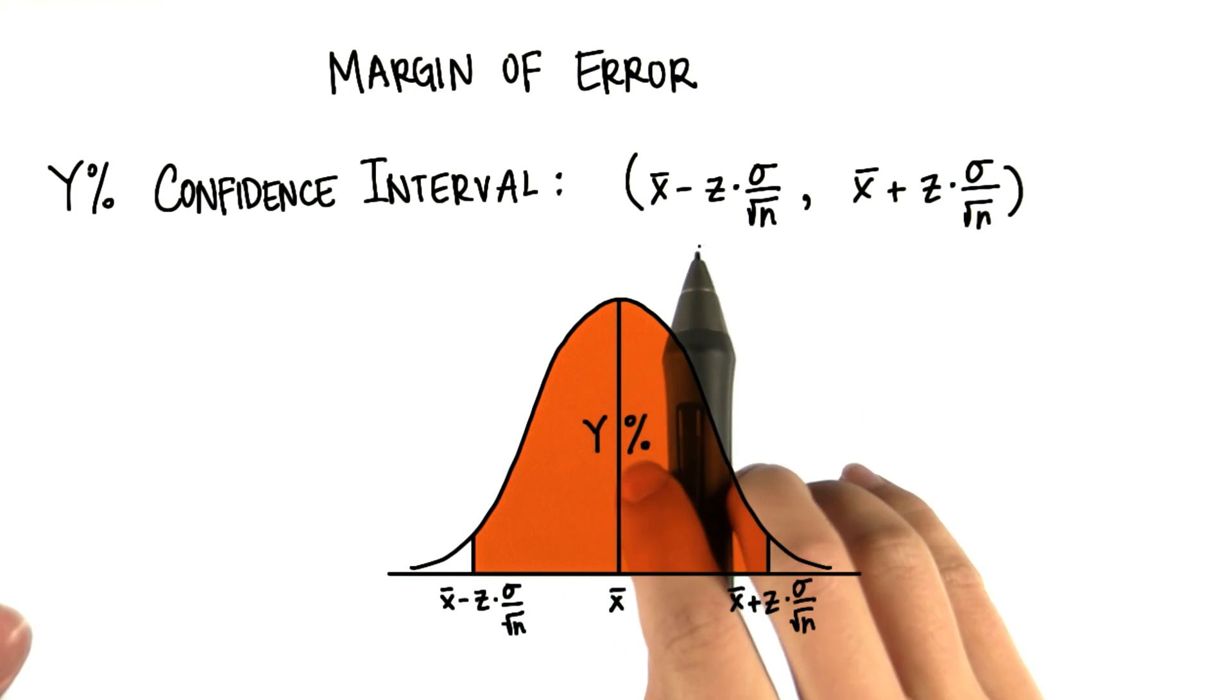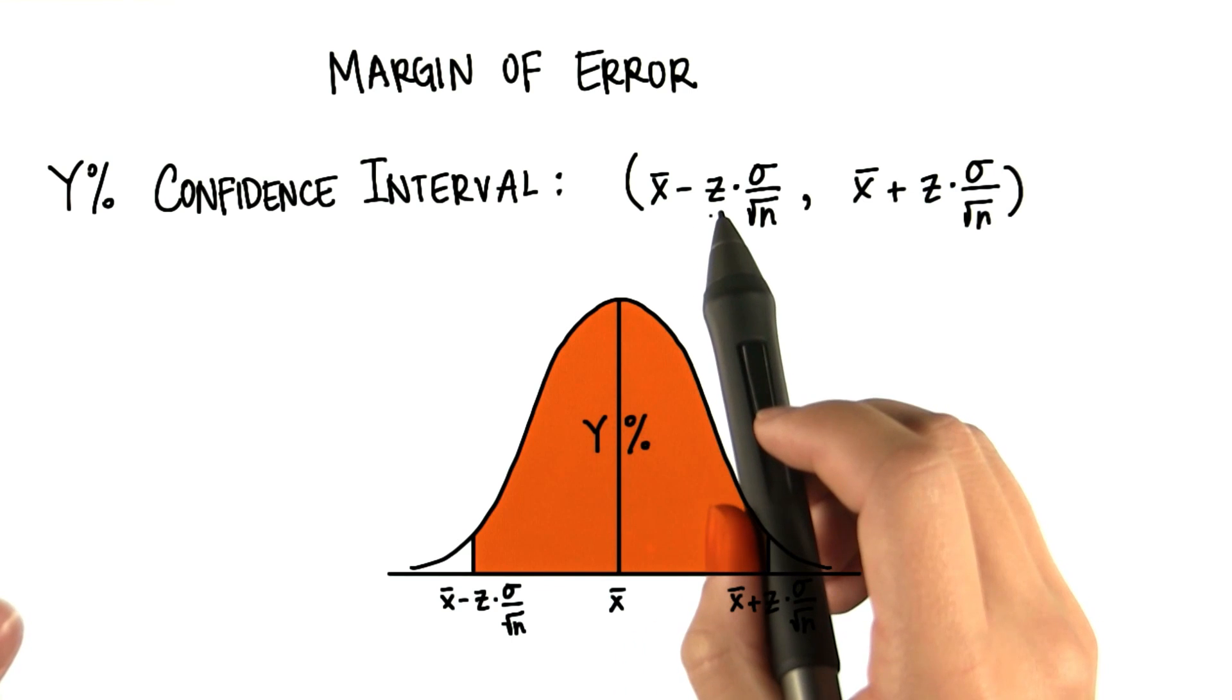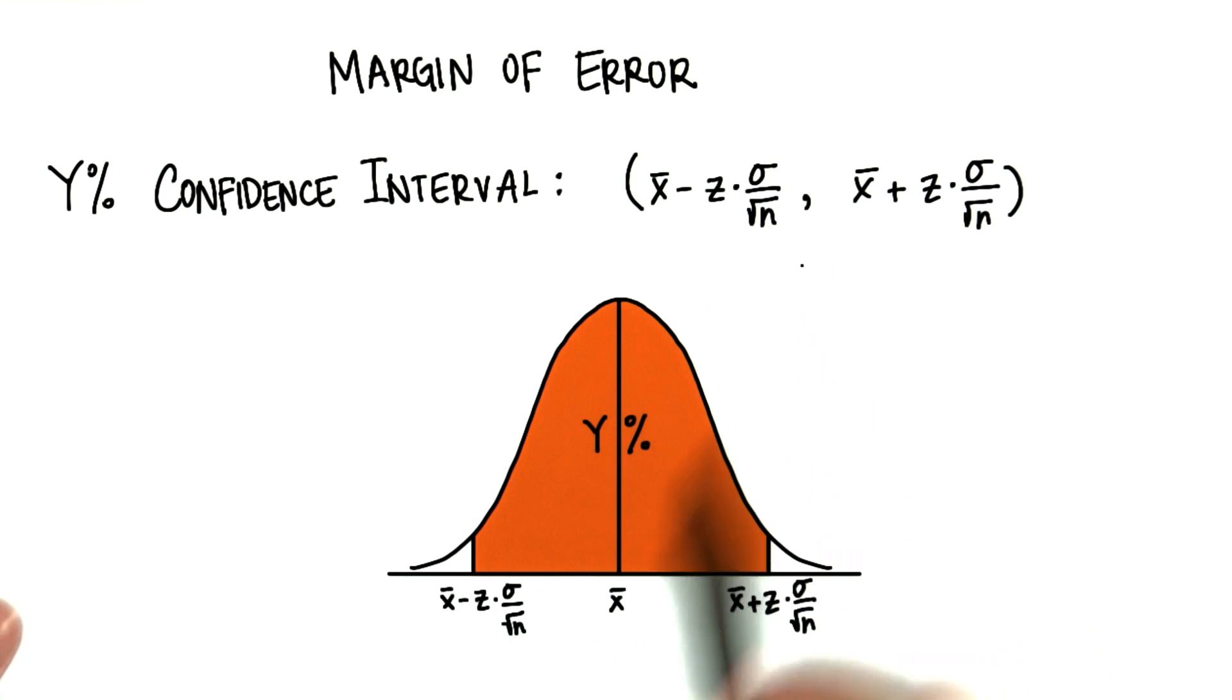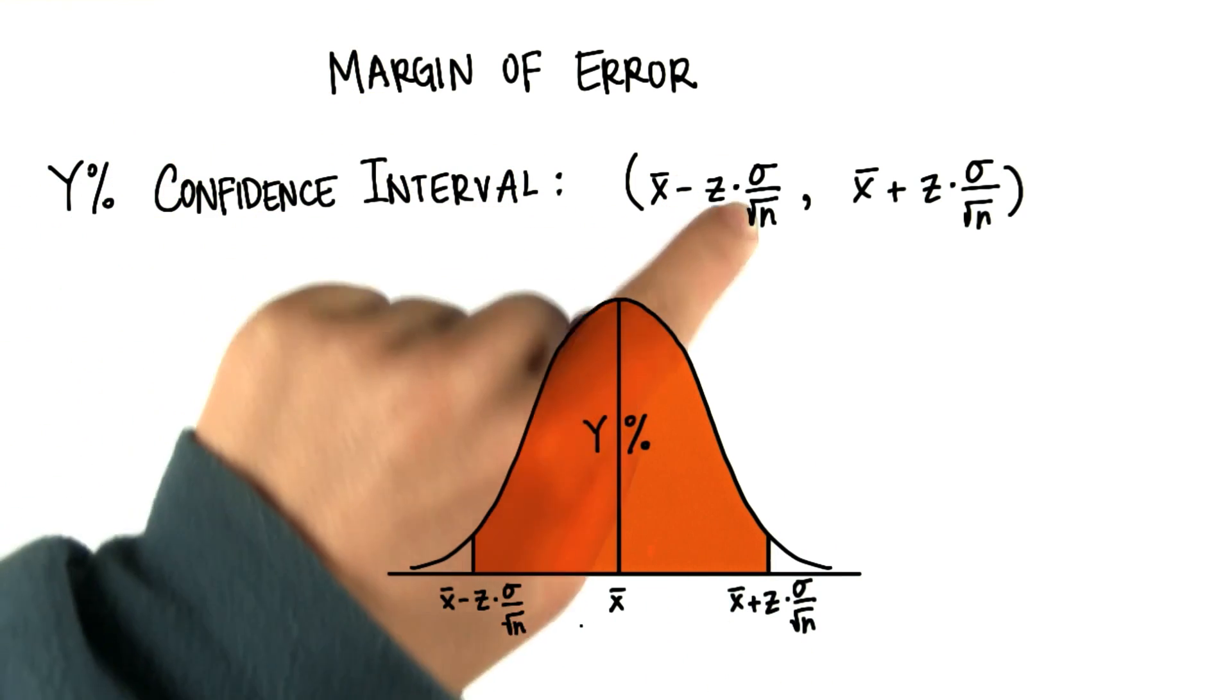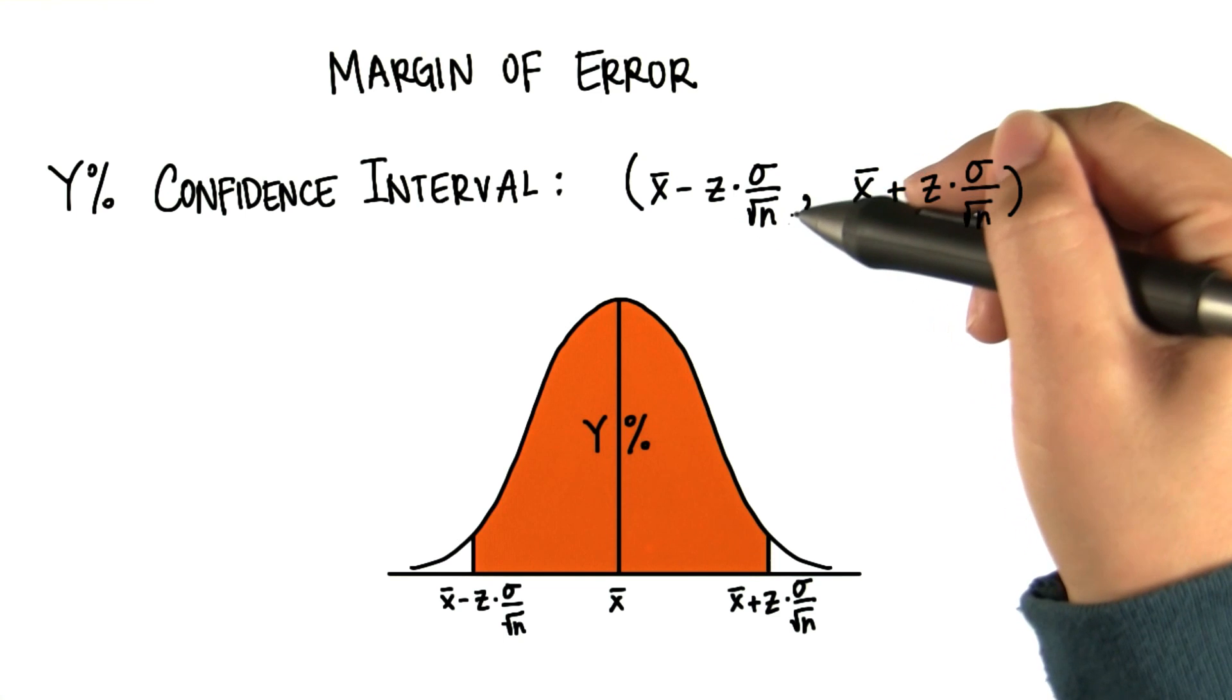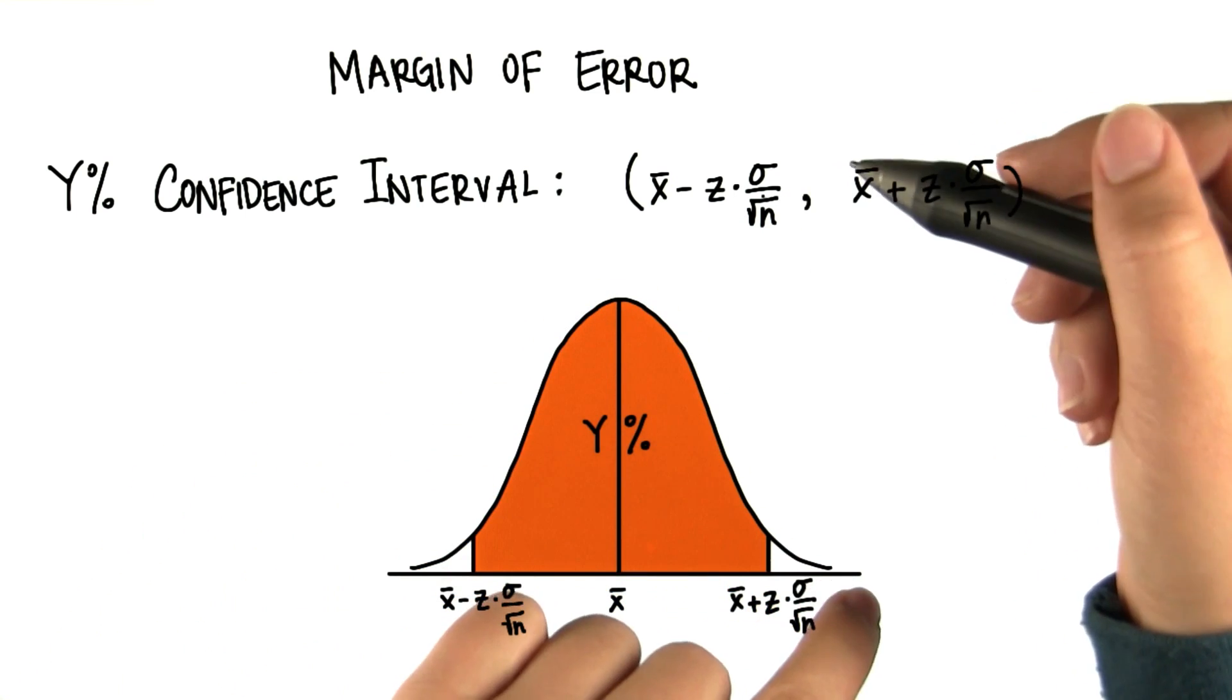The lower bound of the confidence interval is the sample mean minus the number of standard deviations away from the mean. This z value is the number of standard deviations, and sigma divided by the square root of n is the standard deviation of this sampling distribution.